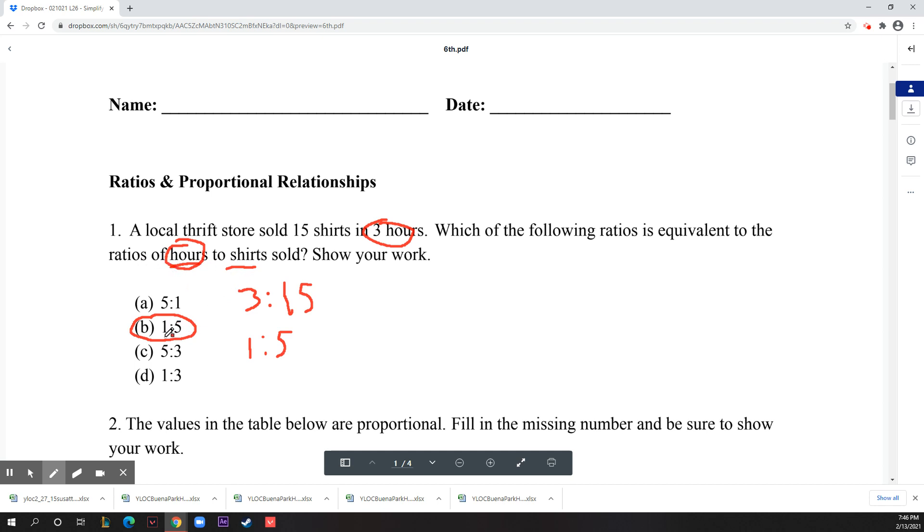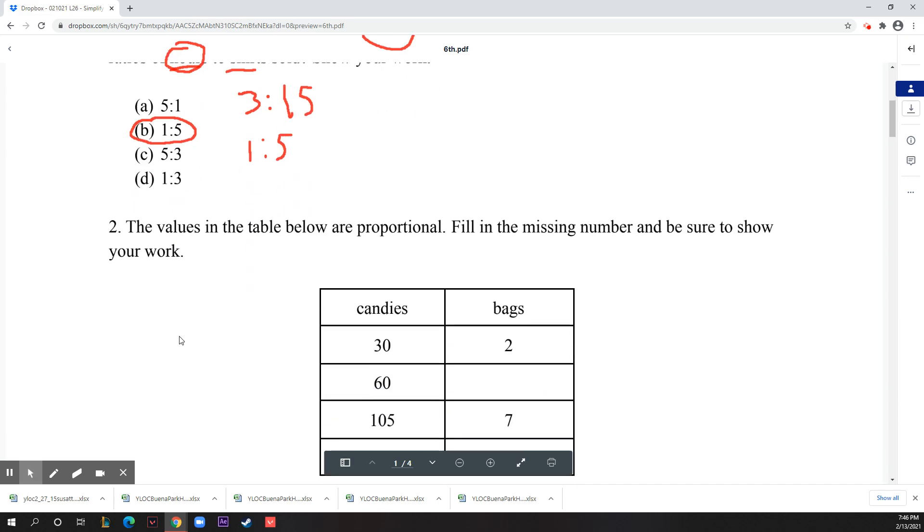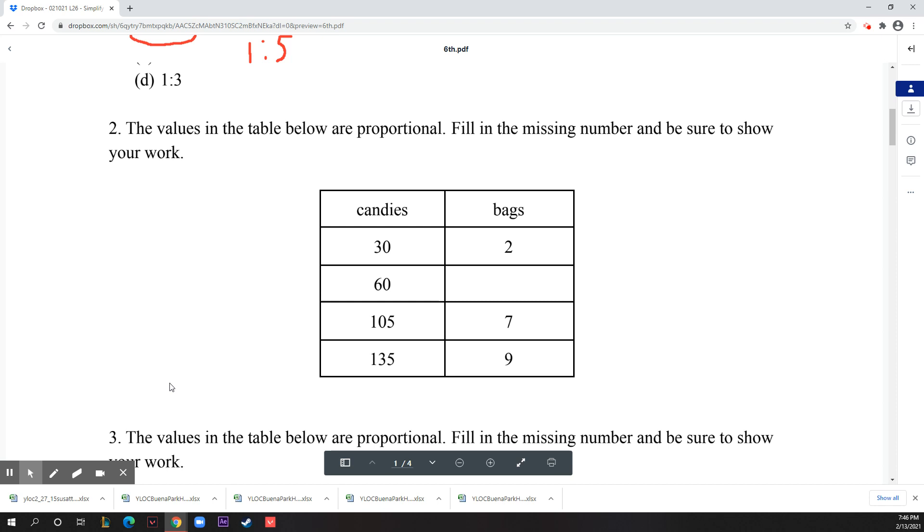Number two: the values in the table below are proportional. Fill in the missing numbers and be sure to show your work. 30 candies to two bags is the same thing as 15 to 1. It's said that it's proportional, so you just want to check if everything's proportional. That means if you divide everything by seven, you should be able to get 15 and 1. Over here it's one, obviously, then this would be 135, and then 15 to 1. Just one more time, you divide everything by nine - you get one here and here it's one, then 45, so you get 15 again.